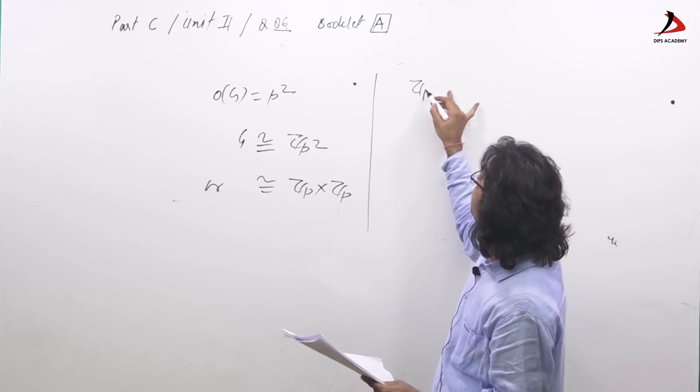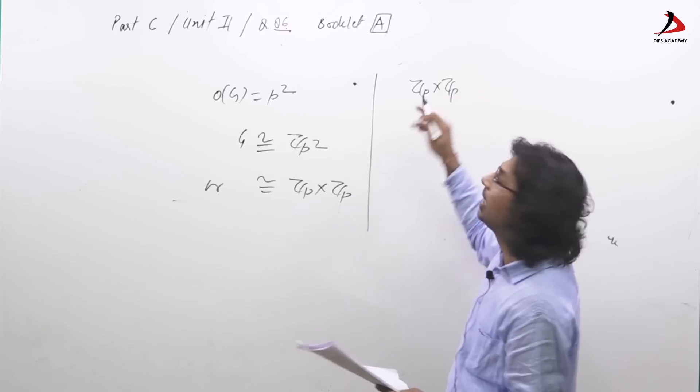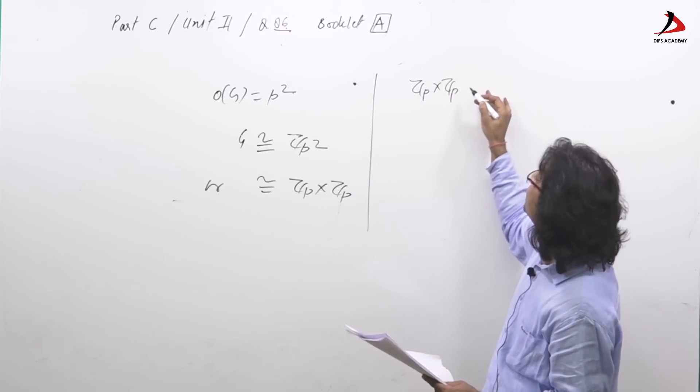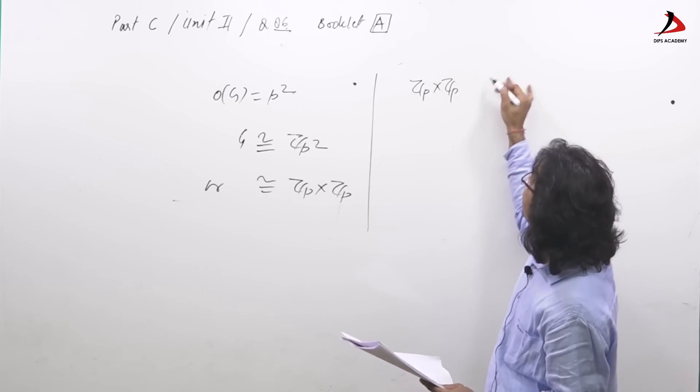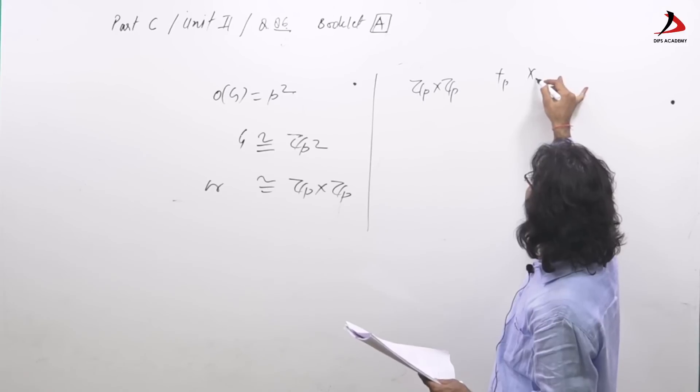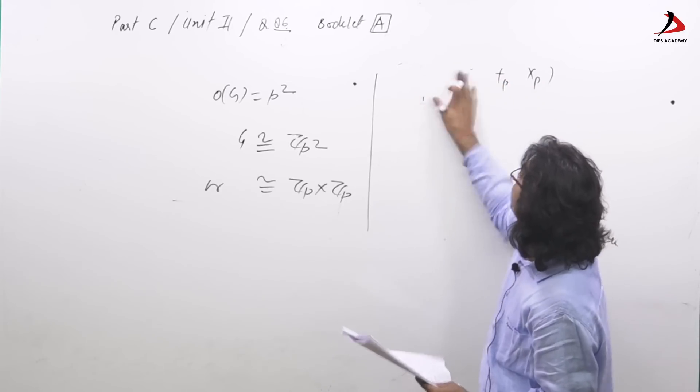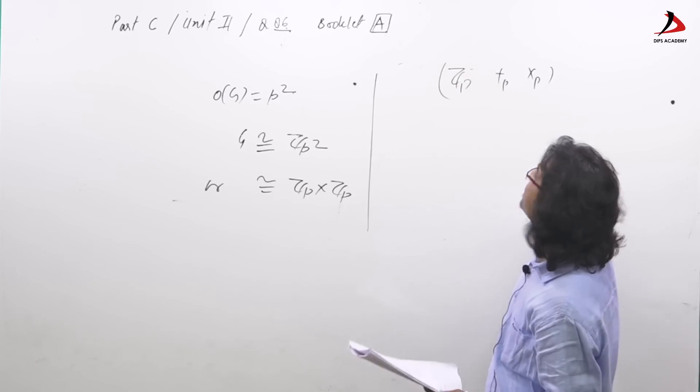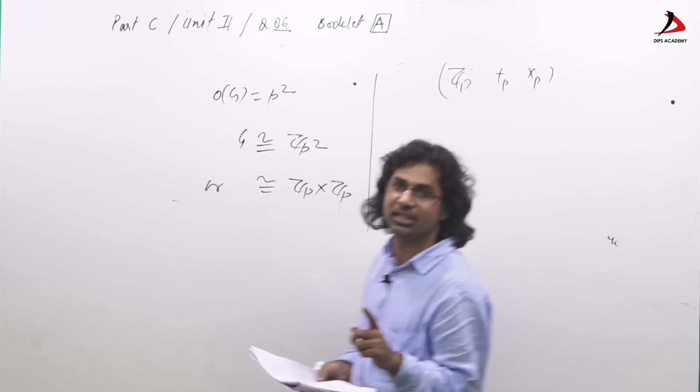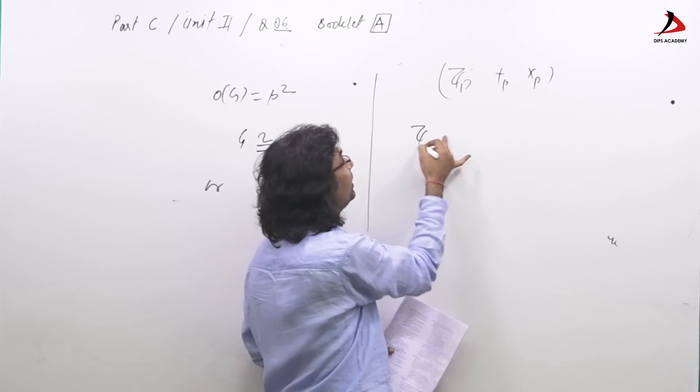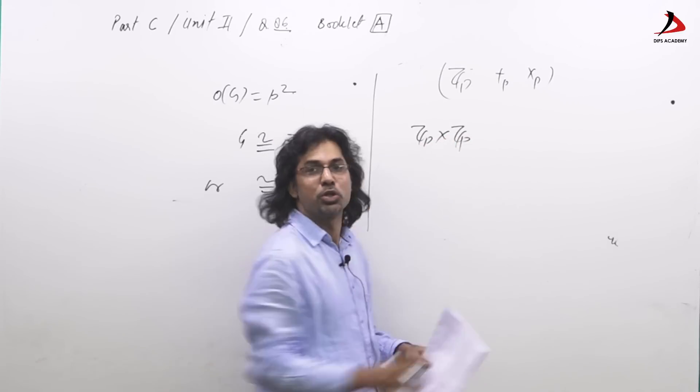See, Z_P cross Z_P where Z_P is ring with respect to this modulo P and this modulo P. We know Z_P this is ring and component-wise multiplication if we take, then Z_P cross Z_P is also a ring.